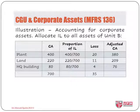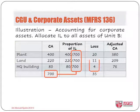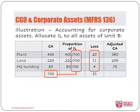Pro-rata means distributing the loss based on the carrying amount of each asset before the loss. We have a total carrying amount of $700 for assets in Unit B, and we use this as the basis to allocate the loss.